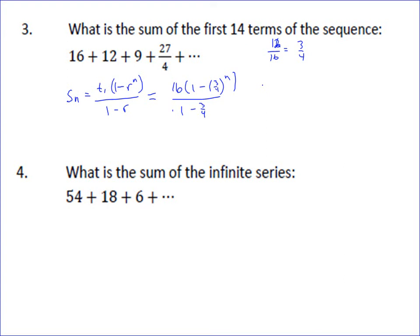And our n is 14, so our problem is just going to be 16 times 1 minus 3 fourths to the 14th, all over 1 minus 3 fourths which is just 1 fourth. And so you can go through and calculate that out, and go through and multiply it out, and you get the sum of the first 14 terms of the sequence. Okay, the next one is the sum, and so if you equal this, that will give you your sum.